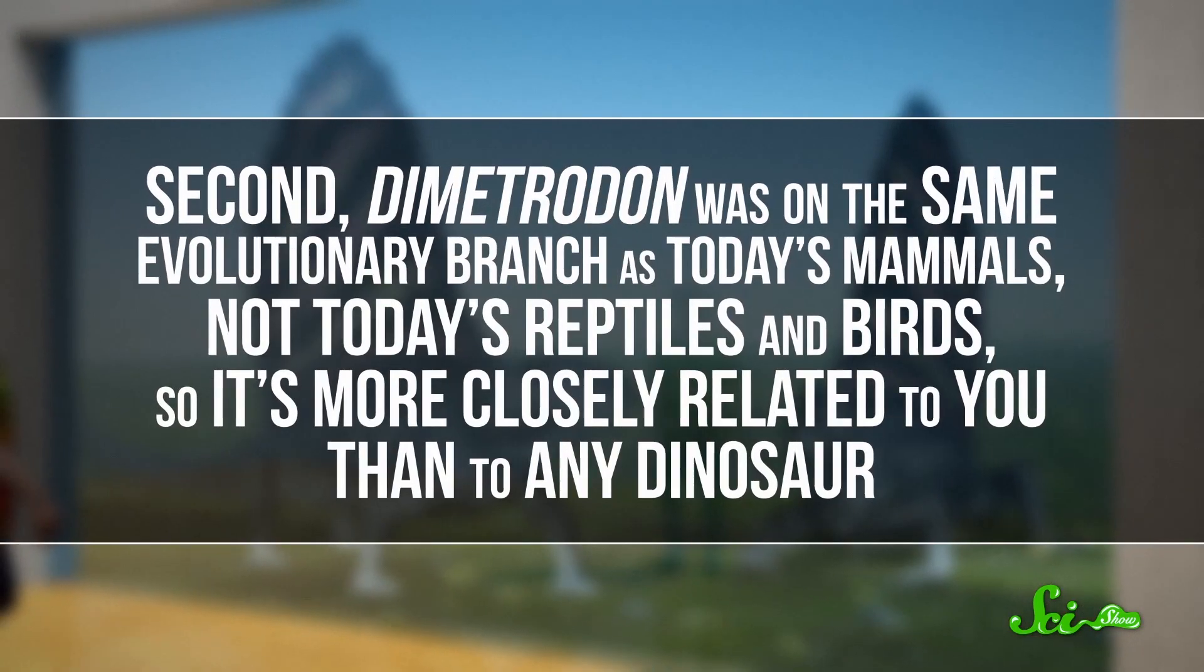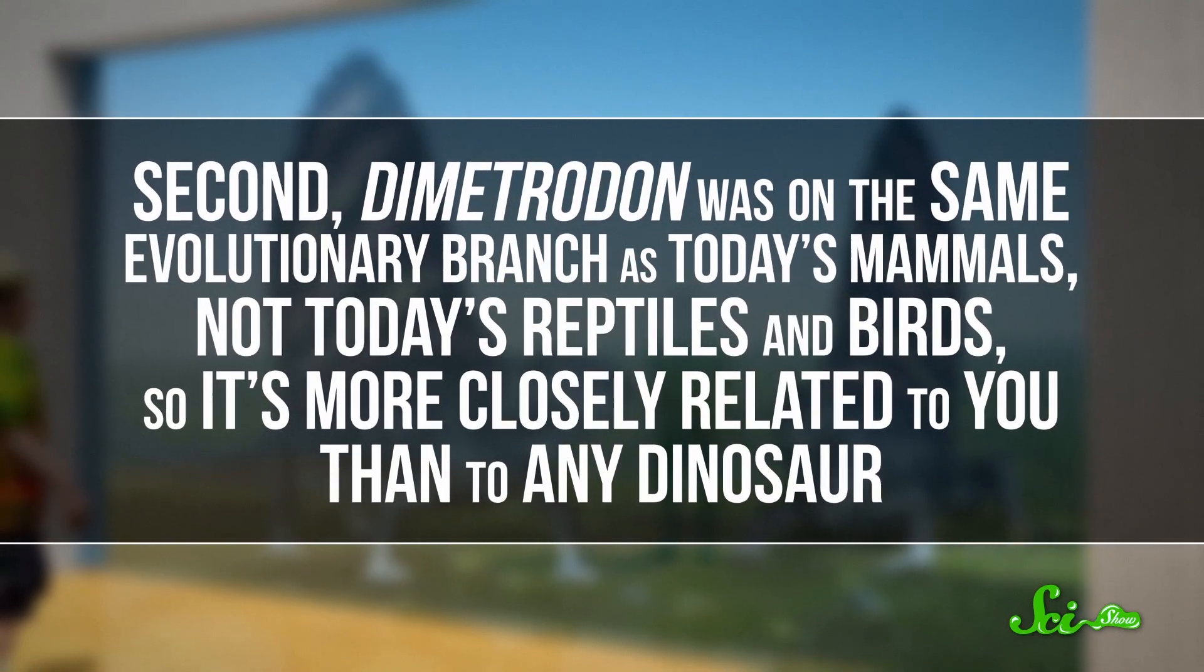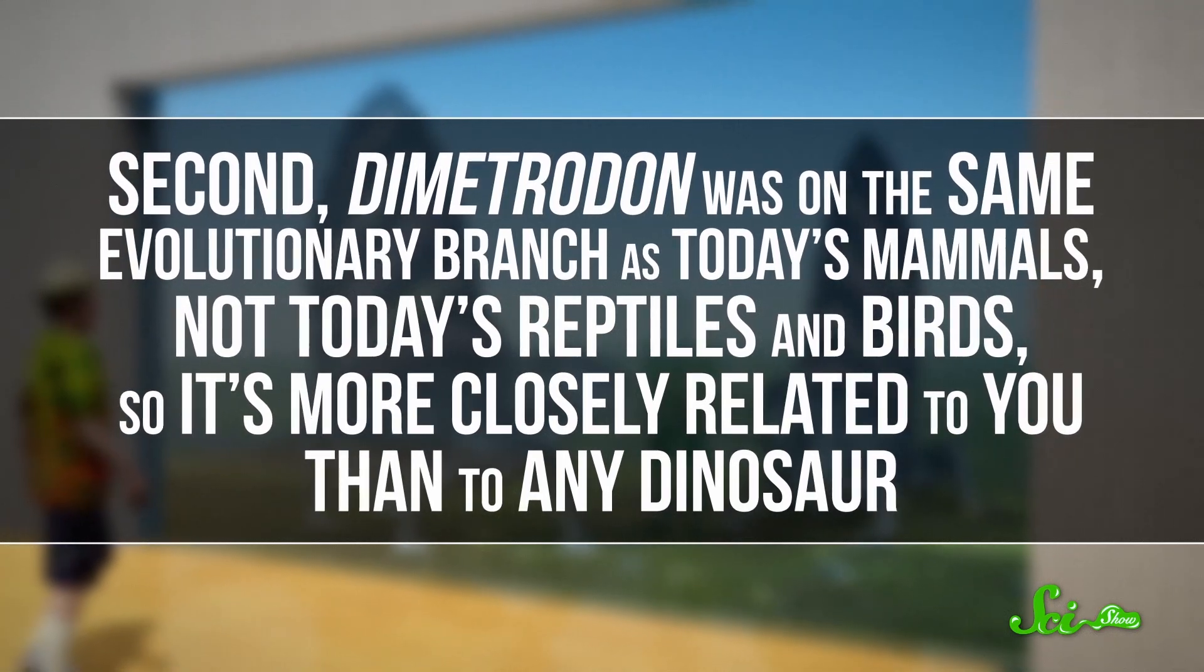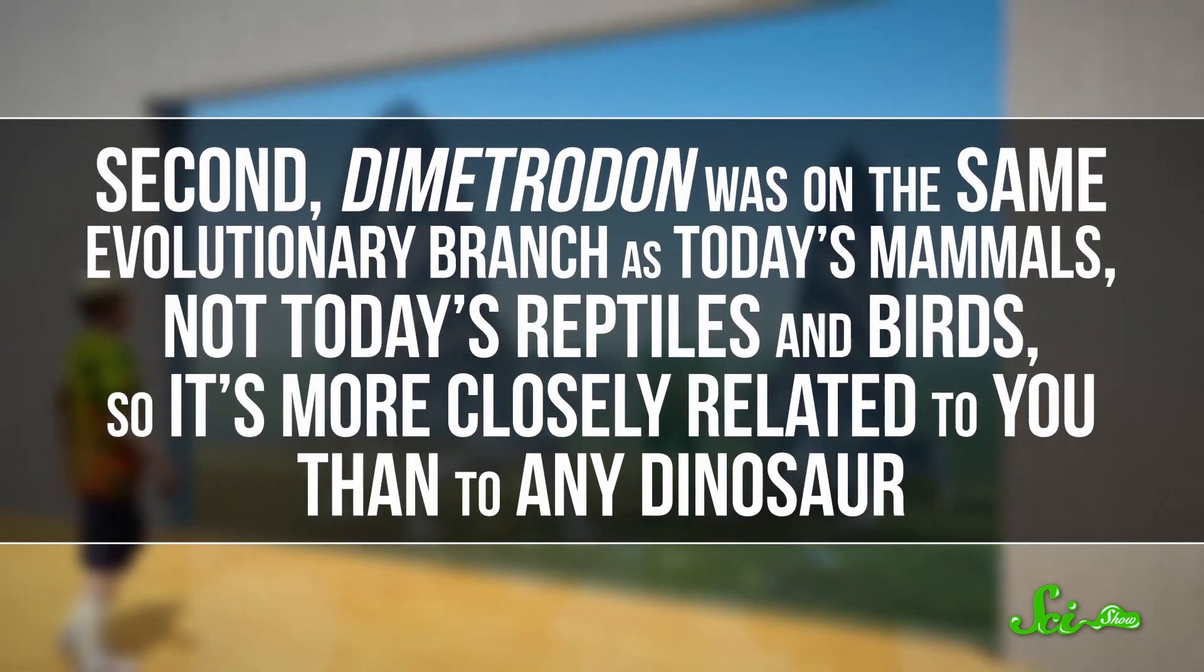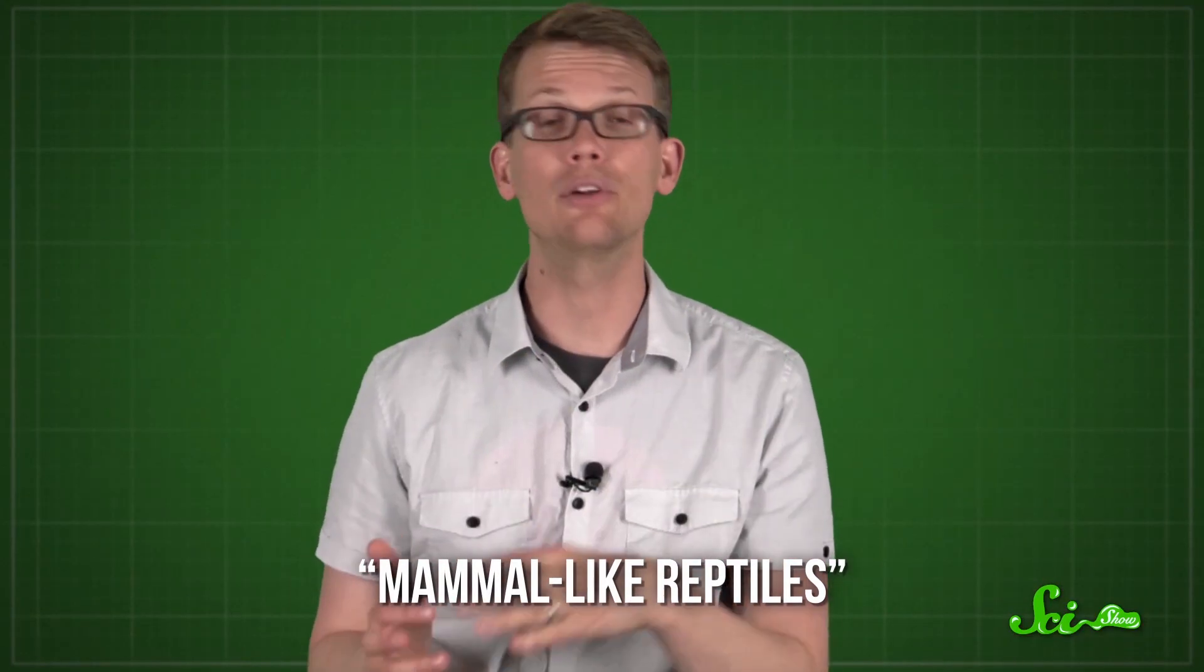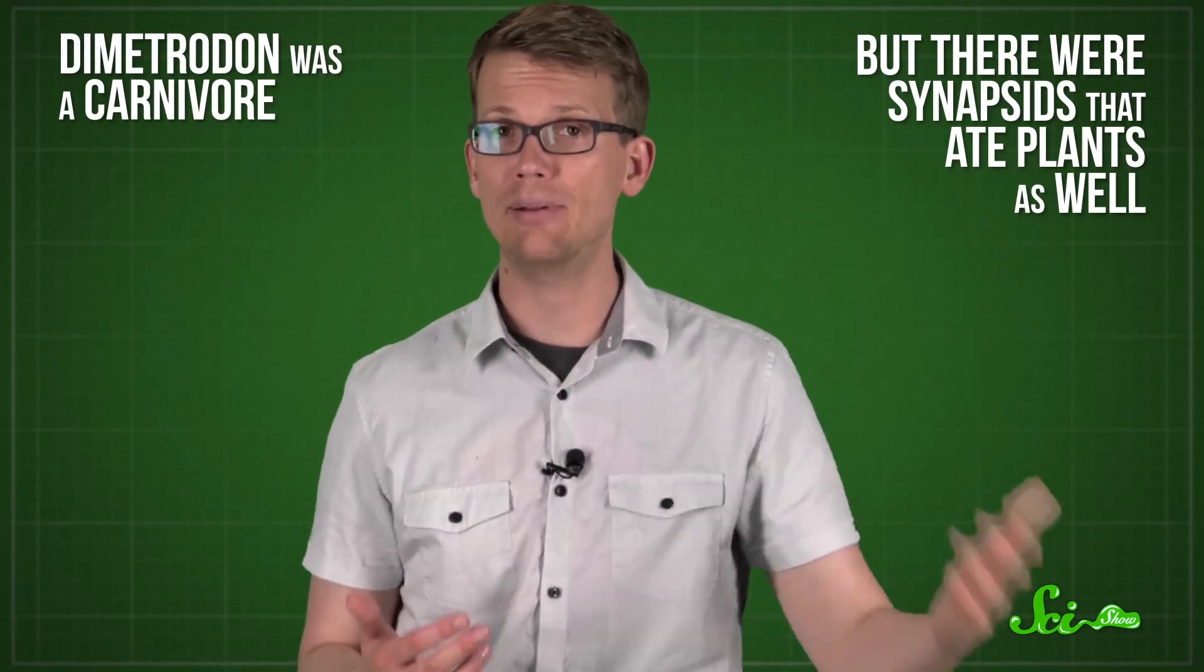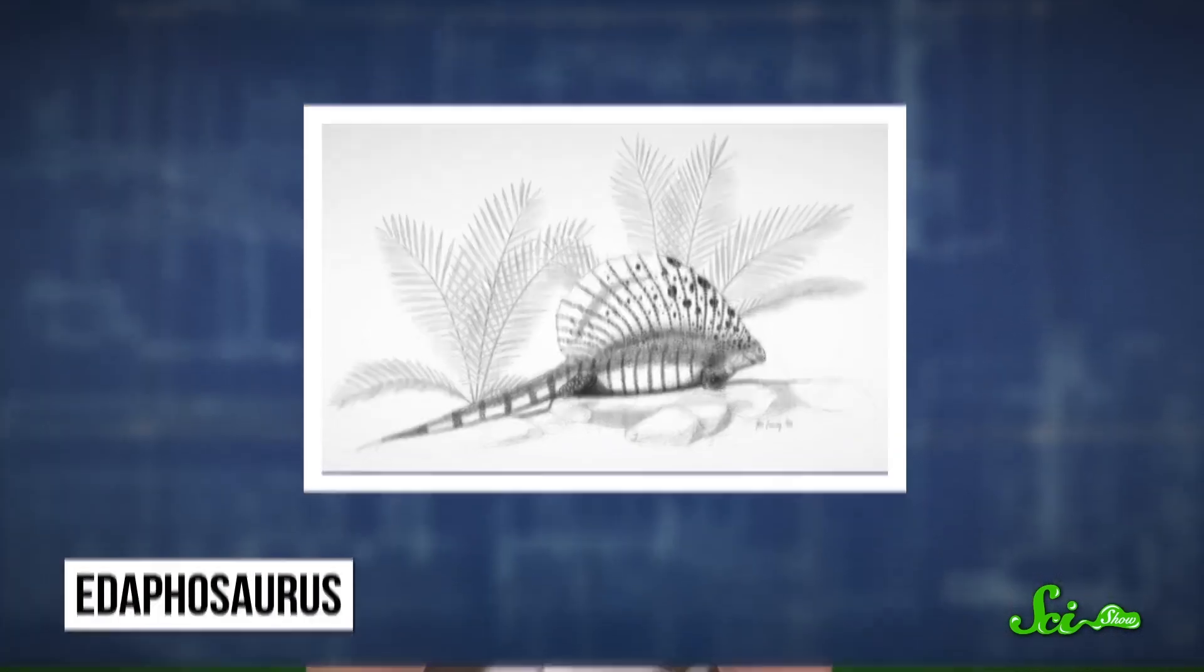Second, Dimetrodon was on the same evolutionary branch as today's mammals, not today's reptiles and birds. So it's more closely related to you than to any dinosaur. It was a member of the group of so-called mammal-like reptiles that came before dinosaurs. Even though they weren't technically reptiles, it can be a helpful way to think of them. Not mammals yet, but getting there. Dimetrodon was a carnivore, but there were synapsids that ate plants as well, like the similar-looking Adaphosaurus, which Dimetrodon probably ate.